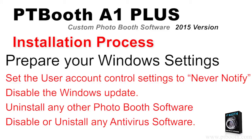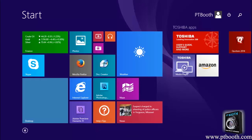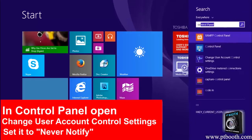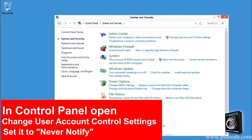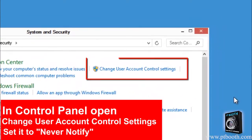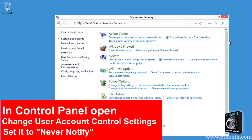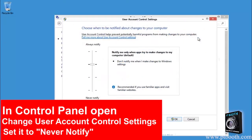In order to achieve the best results when using the PTBooth A1 Plus software we recommend the following: set the user account control settings to never notify, disable the Windows update, uninstall any other Photobooth software, and disable or uninstall any antivirus software. We are using Windows 8 here. Go ahead and open the change user account control settings and set it to never notify.